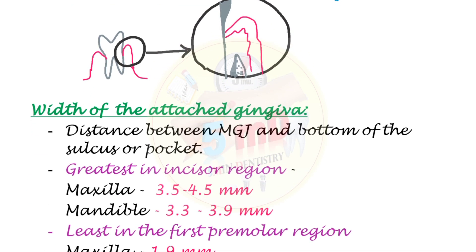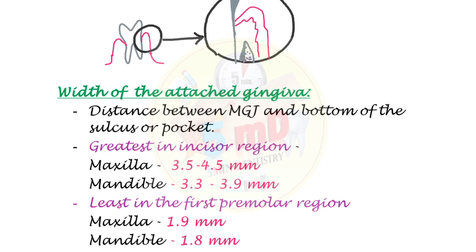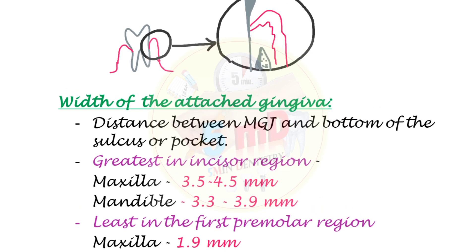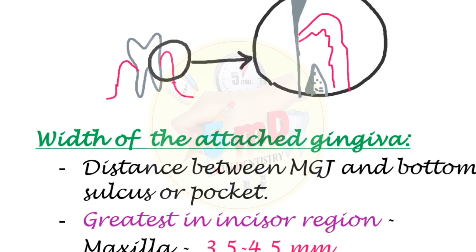Another important clinical parameter is the width of attached gingiva. Similar to probing depth, which was measured with a periodontal probe to determine the depth of the sulcus, the width of attached gingiva is another clinical parameter with significance regarding treatment planning and disease conditions. It is defined as the distance between the mucogingival junction and the bottom of the sulcus or pocket.